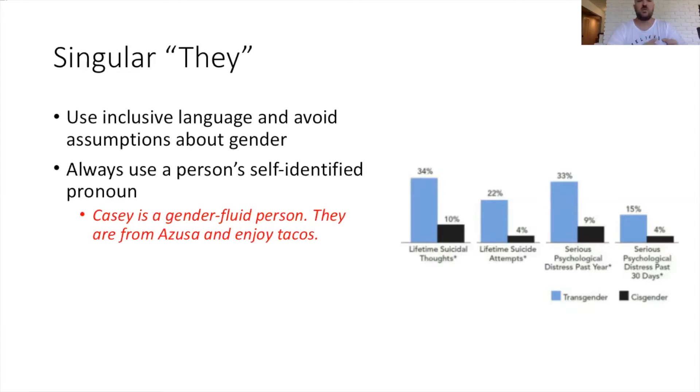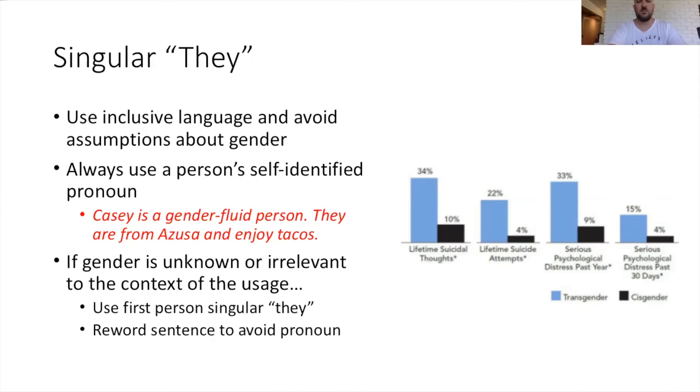If you know this individual and you know how they identify, then certainly use he or she as appropriate or they as appropriate. But if you don't know, then according to APA publication manual, you should be using the singular they. So an example of this: Casey is a gender fluid person, they are from Azusa and enjoy tacos. We could either know Casey and know that Casey prefers the pronoun they, or if we don't know Casey at all, then we would use the pronoun they until we talk to Casey and saw whether Casey preferred he, she, or they.